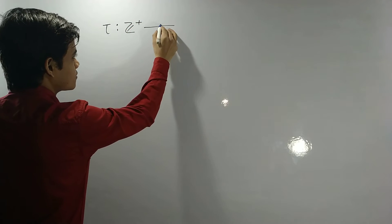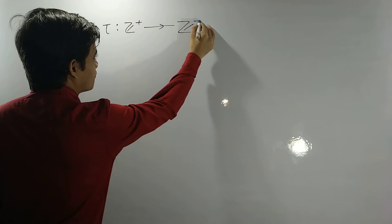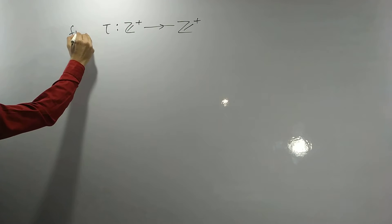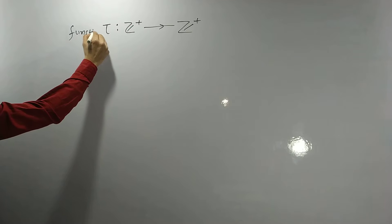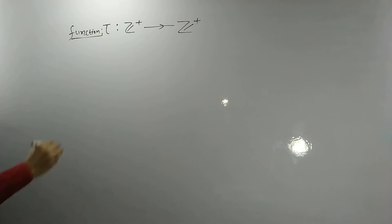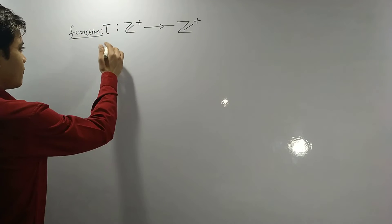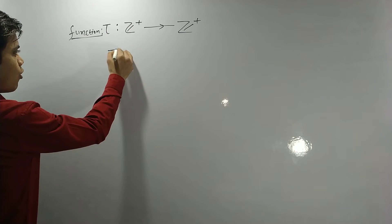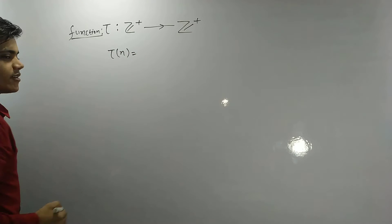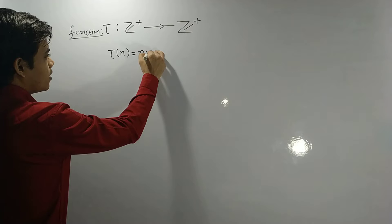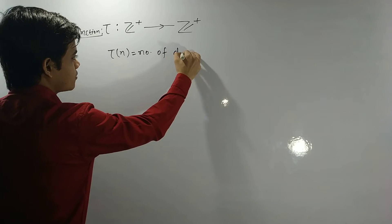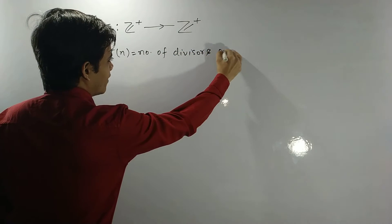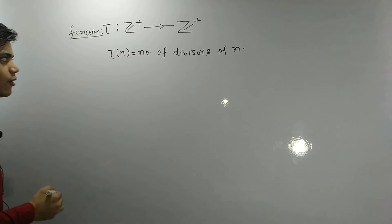Why? How is it defined? For example, Tau of n is defined as the number of divisors of n. Okay, how to calculate it? It is very interesting to see.